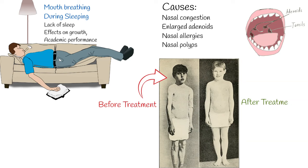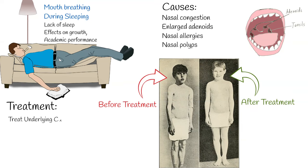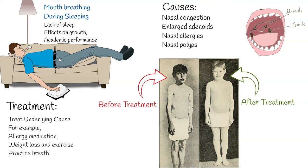We can avoid such negative effects on facial and dental development if mouth breathing is treated early in kids. Treatment addresses the underlying conditions. For example, if mouth breathing is caused by nasal congestion due to allergy, then allergy medication is used. If caused by sleep apnea, in many cases weight loss and exercise is the treatment. Practice breathing in and out through your nose. If adenoid hypertrophy is present, then adenoidectomy is the treatment.